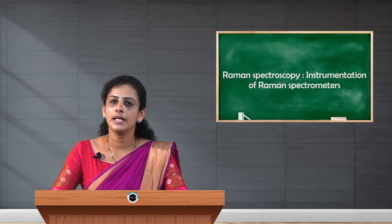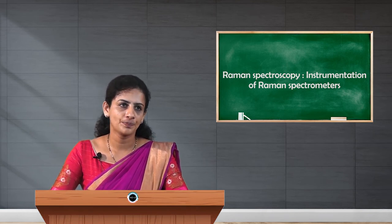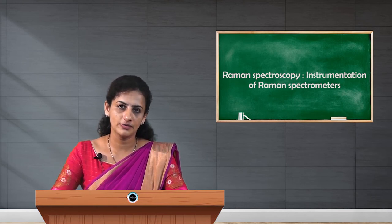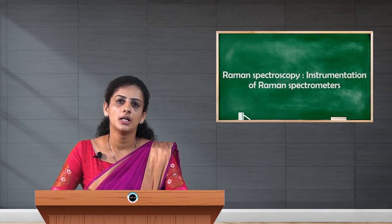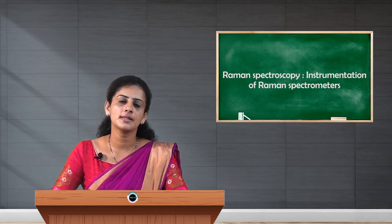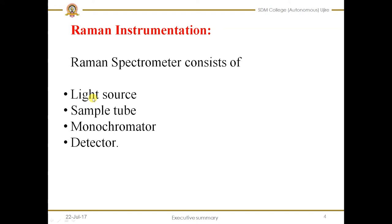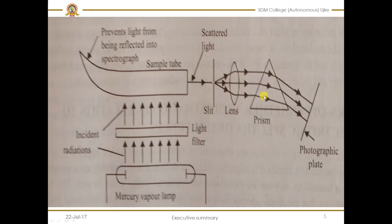Next, let us discuss the instrumentation. As we know, in Raman spectroscopy we are going to study the scattering of light. Using a Raman spectrometer, we can study the scattered light that is at right angles to that of the incident light. The Raman spectrometer consists of a light source, sample tube, monochromator, and detector. Here is the skeletal representation of the Raman spectrometer.